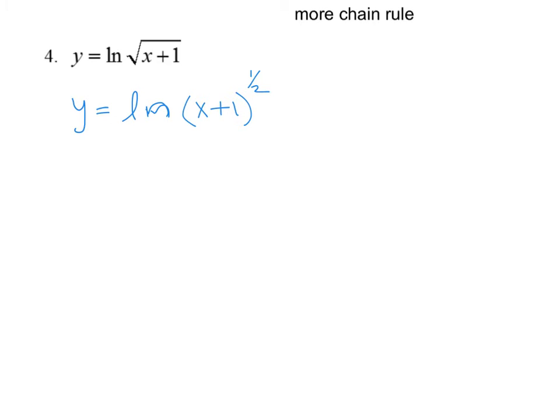I can remember that this is something to a power and rewrite it. Notice I haven't taken the derivative yet and rewrite it as 1/2 the natural log of x plus 1. Then when I take the derivative, 1 half over x plus 1 times the derivative, which is that.